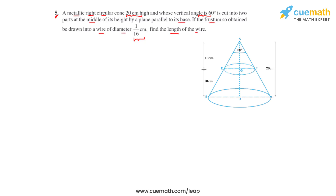Let's draw the figure for the question first. The metallic right circular cone has a total height of 20 centimeters and its vertical angle is 60 degrees, as highlighted in the figure. It is cut from the middle by a plane parallel to the base, so EF is parallel to BC. It gets divided into two sections — the upper section is a cone itself, and the lower section is in the shape of a frustum with two circular ends.